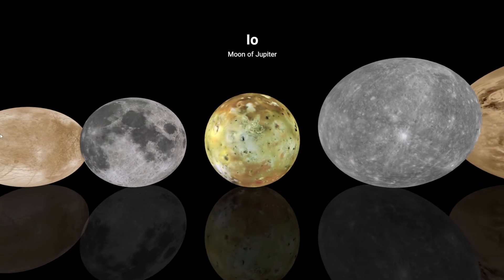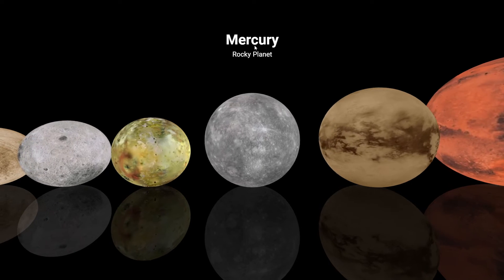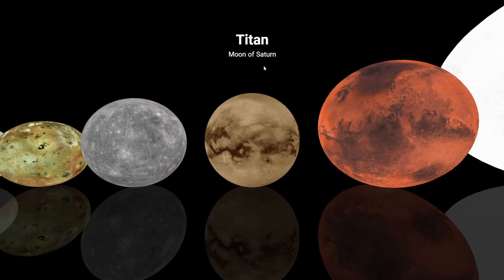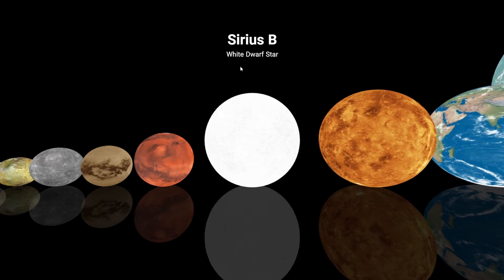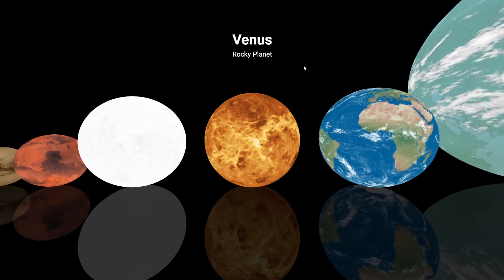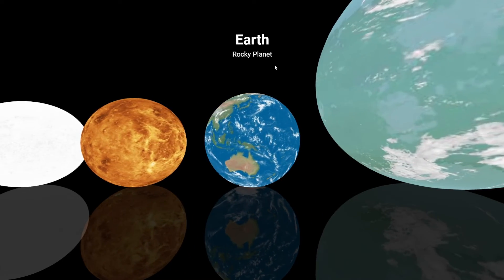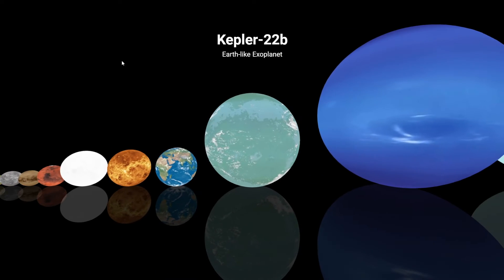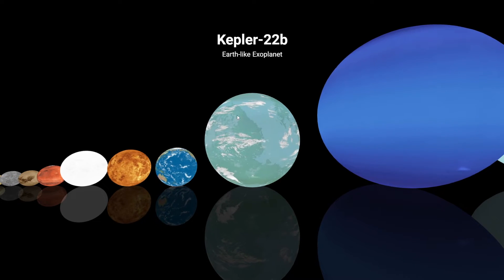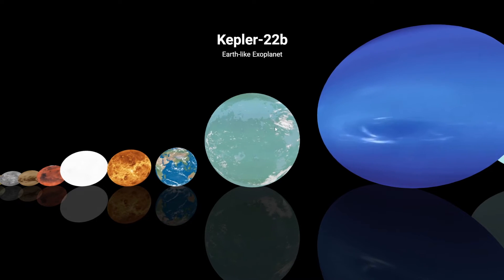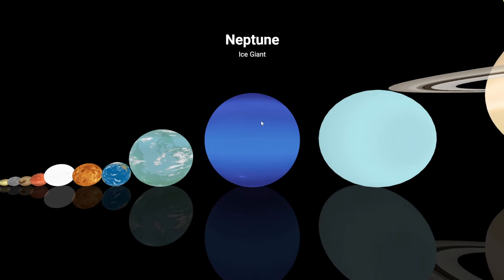Io, moon of Jupiter. Mercury — rocky planet. Titan, moon of Saturn. Mars, rocky planet. Then Sirius B, a white dwarf star. Earth, Venus, both rocky planets. And Kepler 22b, an Earth-like exoplanet — could we live on this? It looks like it has some land and some clouds.